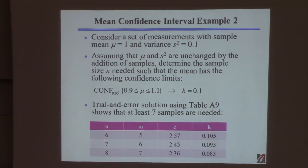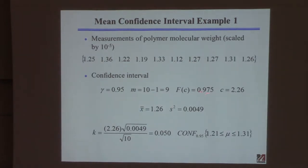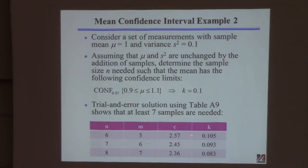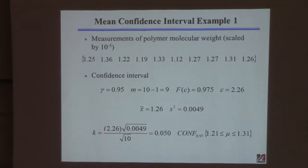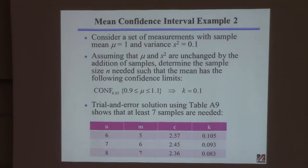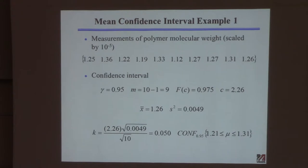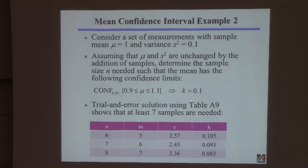I take a number of samples — say six — calculate degrees of freedom = 5, and since it's still 95% confidence, f = 0.975. Then I look up the value of c for that combination of f and m. I calculate the corresponding k using the same equation, but now I'm picking different values of n — which changes the degrees of freedom, which changes c, which changes k.